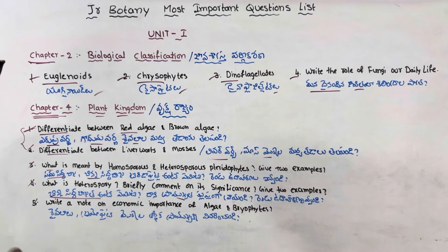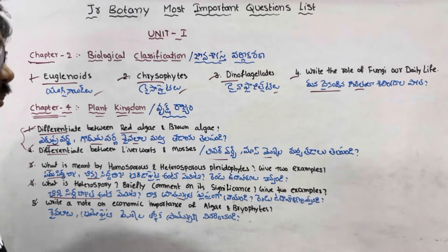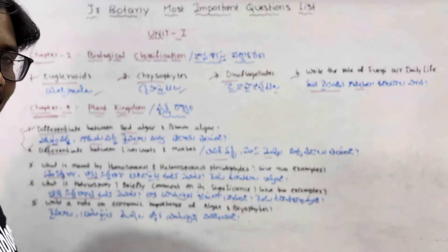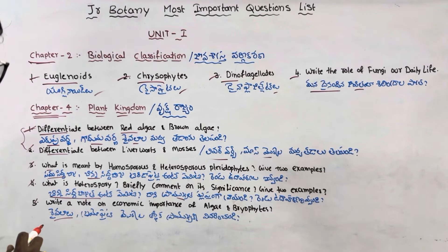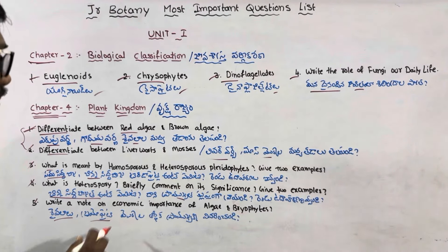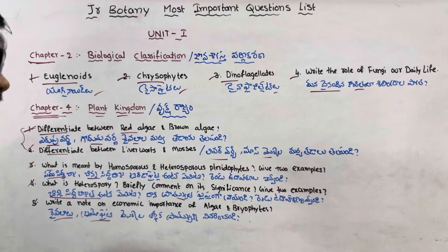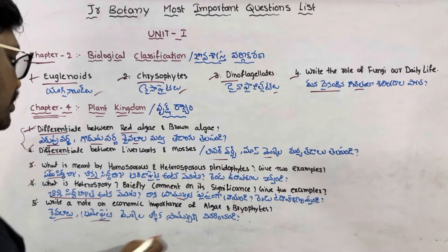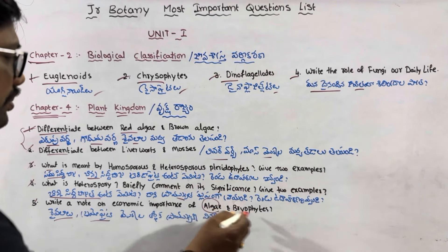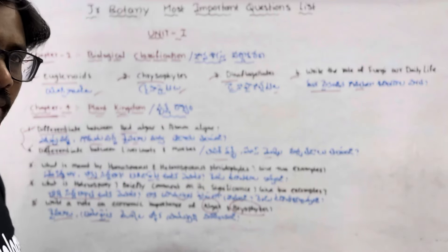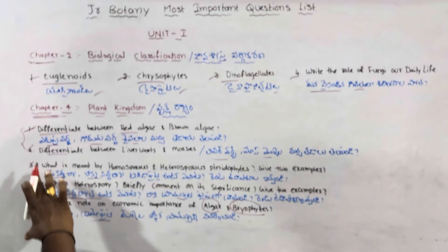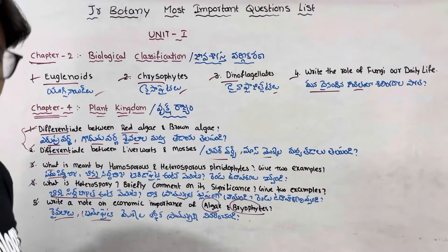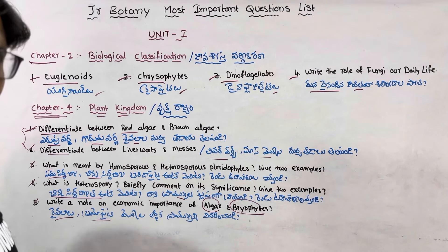The next important question is: write a note on the economic importance of algae and bryophytes. Economic importance is a major topic, and this is one of the five most important questions for this unit.